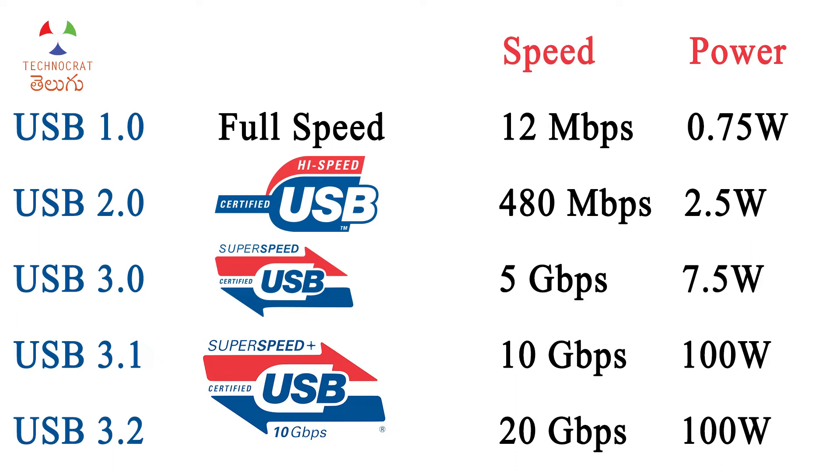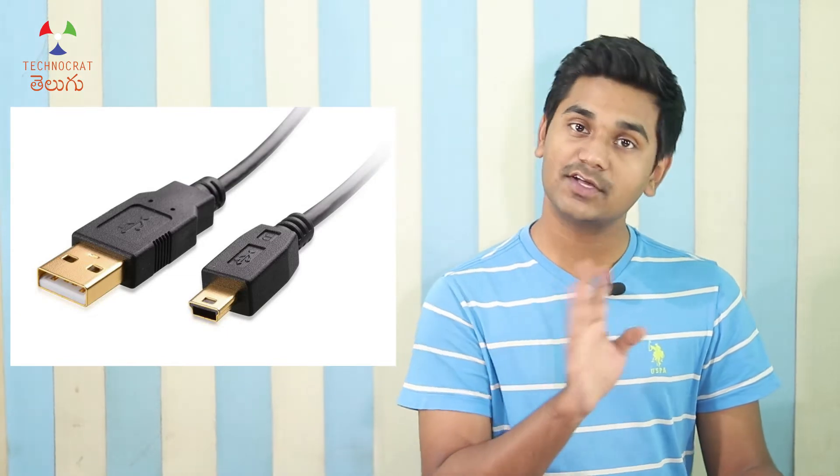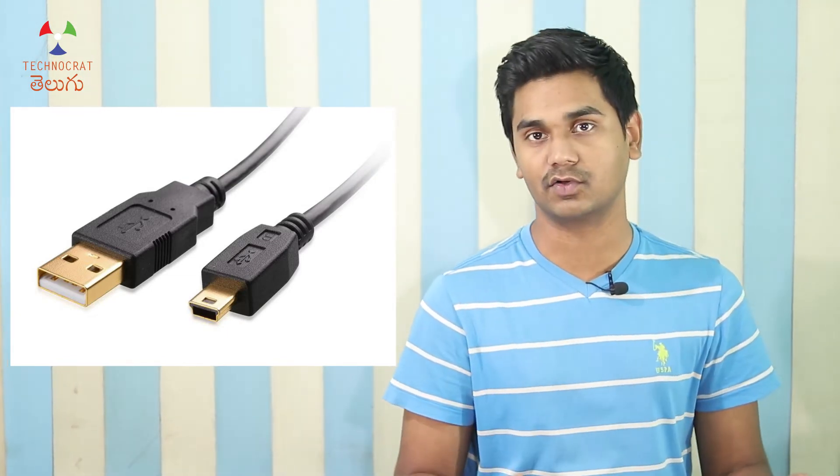USB 3.1 gives 10 Gbps speed. USB 3.2 supports 20 Gbps speed. If you have a white port, you use USB 2.0 on USB 2.0. If you look at the blue port, you can use USB 3.0 on USB 2.0. Speed depends on the version used.